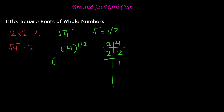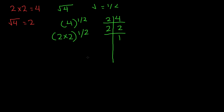Now we can replace the 4 with 2 multiplied by 2 to the power of 1 half. Next, we have to find the power of each of these factors. If there isn't any power written, that means it's to the power of 1, because any number to the power of 1 is that number. Since the base is the same — both have a base of 2 — we can add the powers together. So 1 plus 1 gives us 2 to the power of 2, and then to the power of 1 half.